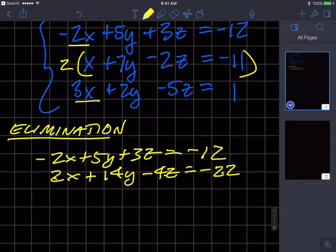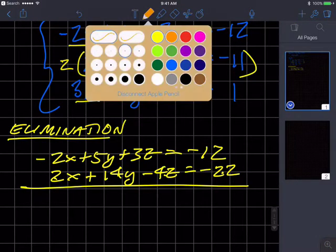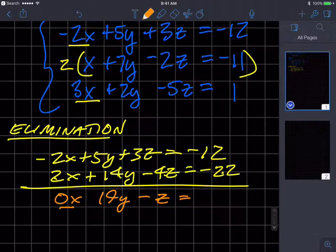And then I'm also going to, let's do that. Let's do it this way. Okay. So I'm going to add these two equations. The x term goes to 0. I'm going to write it this one time. I'm going to stop writing it from now on. So that's going to be 19y minus z equals negative 34.